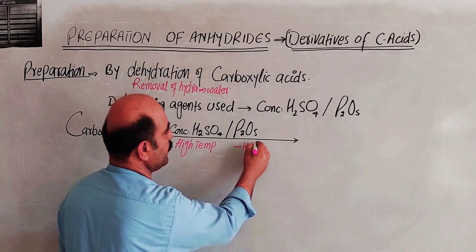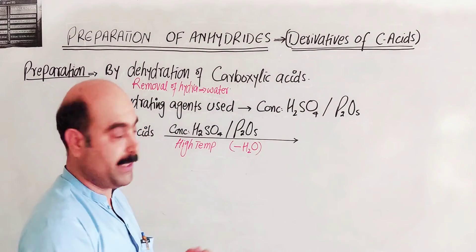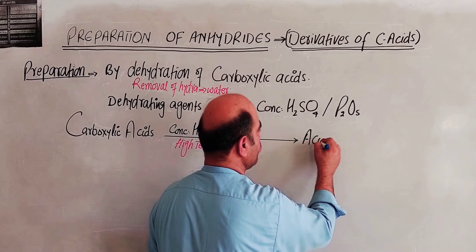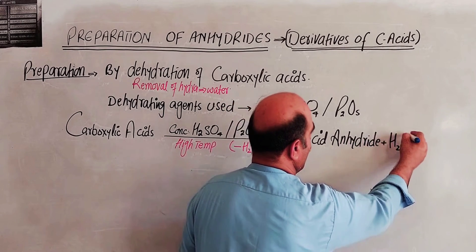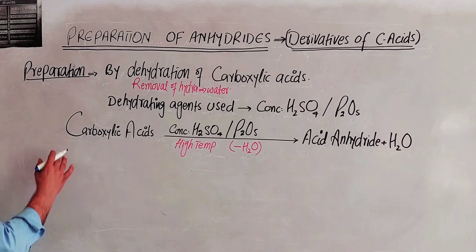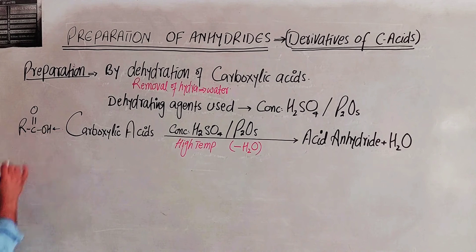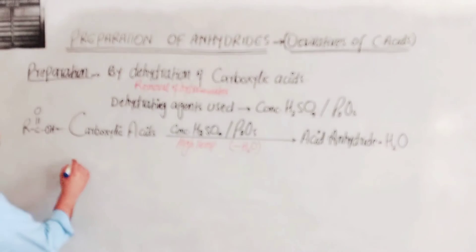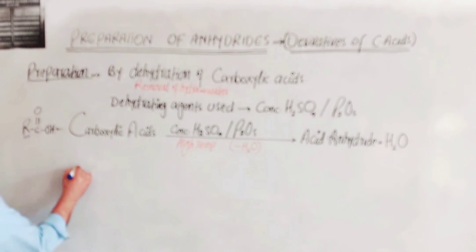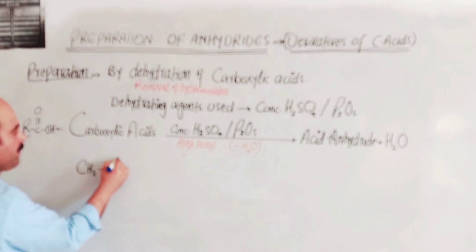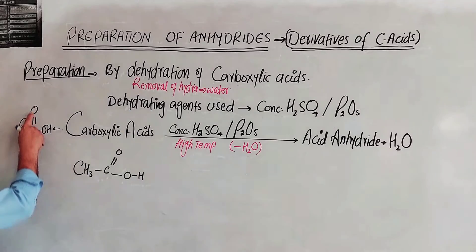The process is: minus H2O, dehydration — water (hydrate) is removed. The general formula is COOH. This is the general formula of a carboxyl group. For example: CH3-C(=O)-OH plus CH3-C(=O)-OH. These two acetic acid molecules react together.